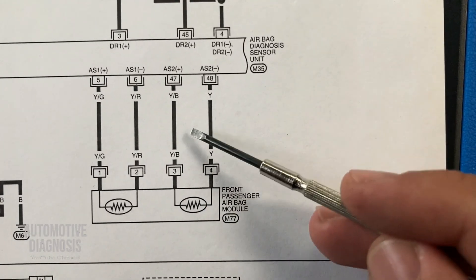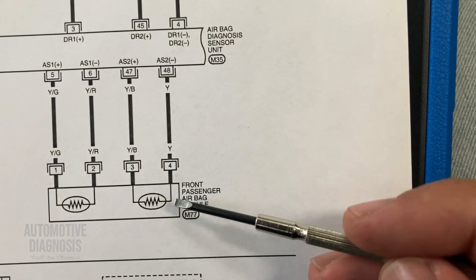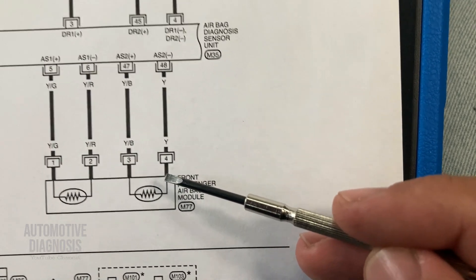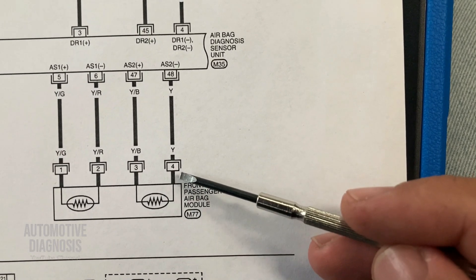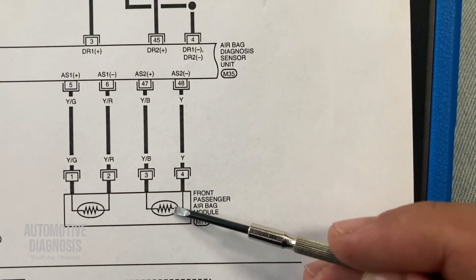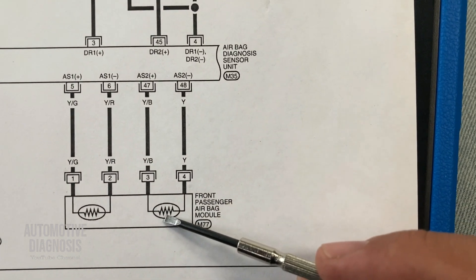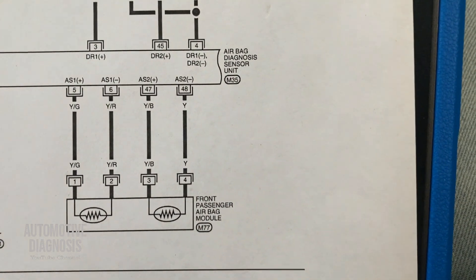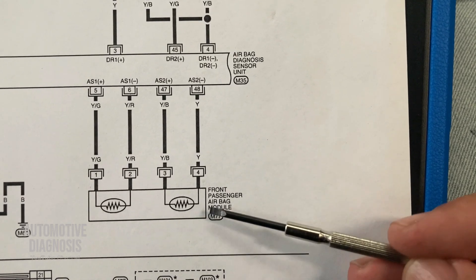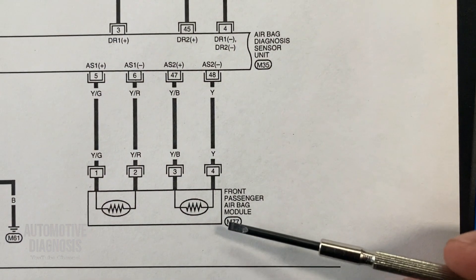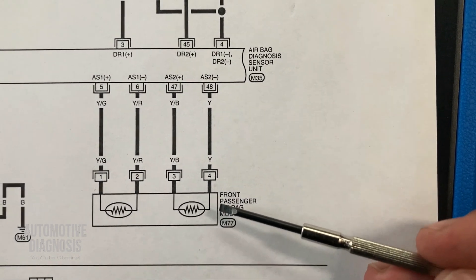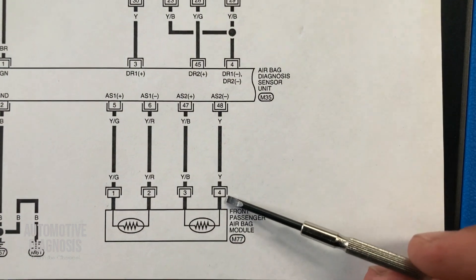These two wires connect to the igniter inside the airbag. The problem could be an open circuit on the igniter or on the wiring. After checking the connector — which was okay with no loose connections — I need to check the airbag itself. The igniter has an internal resistance of 2.2 ohms, but you should never measure the internal resistance of the airbag directly, because it may deploy the airbag.